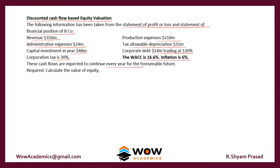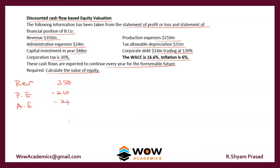These cash flows are expected to continue every year for the foreseeable future — the same numbers will occur for a long number of years. Our job is to find out the value of equity. We follow the format seen earlier, starting from revenue of 350, production expense of 210, administration expense of 24, and depreciation of 31. This gives profit before tax of 85. Deducting tax at 30%, the tax comes to 25.5.